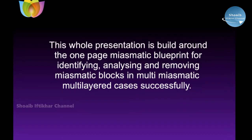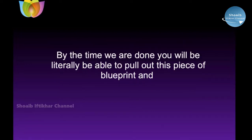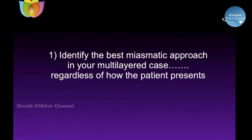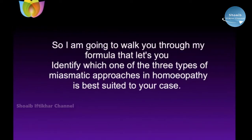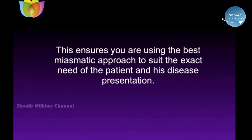This three-part presentation is built around a one-page miasmatic blueprint for identifying, analyzing, and removing miasmatic blocks in multi-miasmatic, multi-layered cases — cases where many disease states come together to form a complex, conjoined picture. By the time we're done, you'll be able to identify the best miasmatic approach in your multilayer case, regardless of how your patient is presenting. I'll walk you through my formula to identify which of three approaches — the Hahnemannian, the Kentian, or the Sankaran — is best suited to your case at any given point.